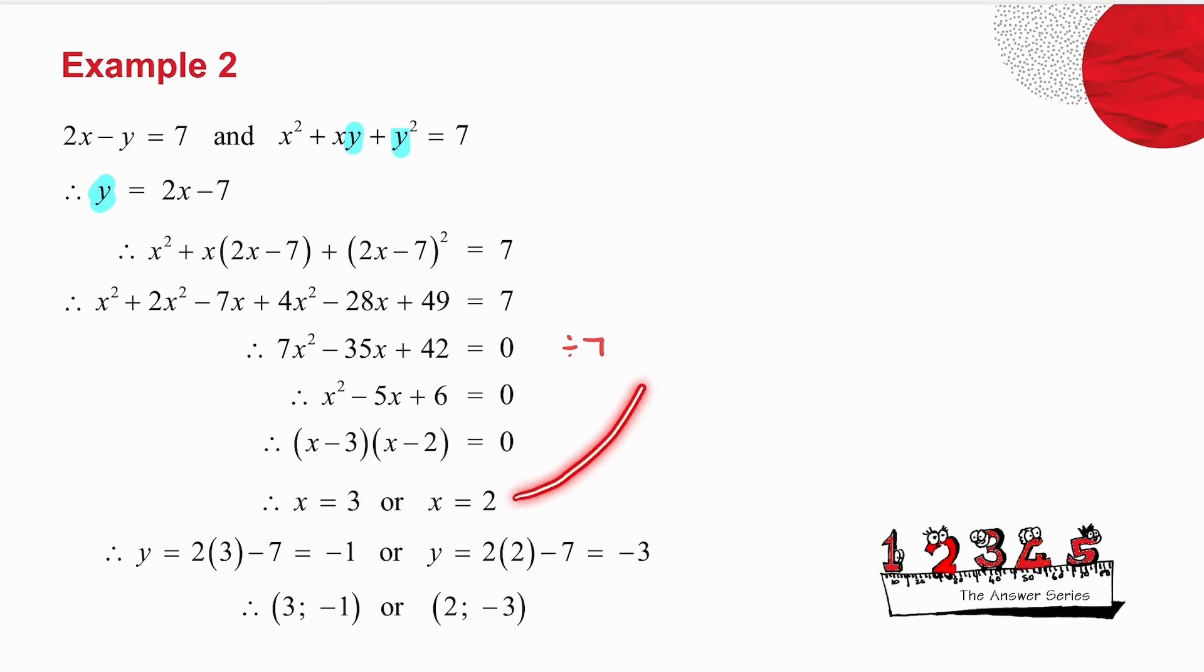I take those two values, and I substitute them back into that equation, and I get the corresponding values of y. So my solutions are x equals 3, y equals minus 1, or x equals 2, y equals minus 3.